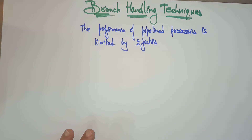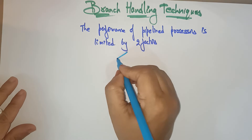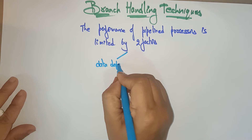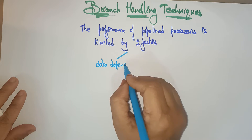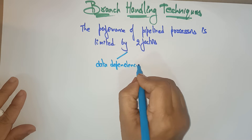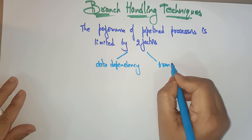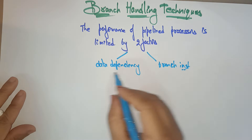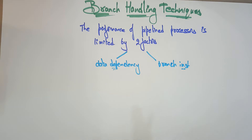We all know that the performance of a pipeline processor is limited by two factors. The two factors are data dependency and branch instruction. The performance of a pipeline processor depends upon these two factors.